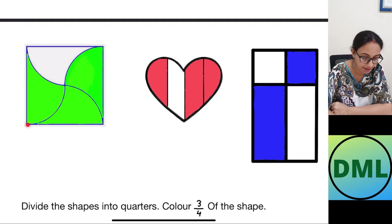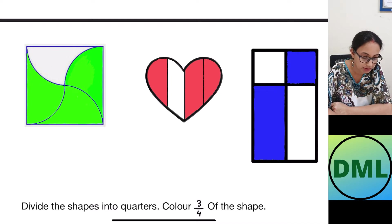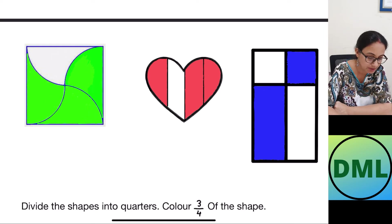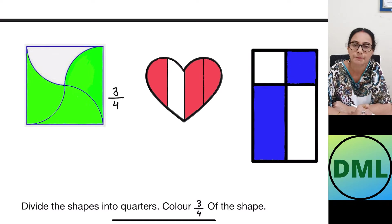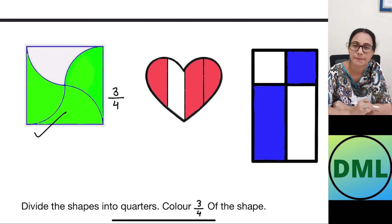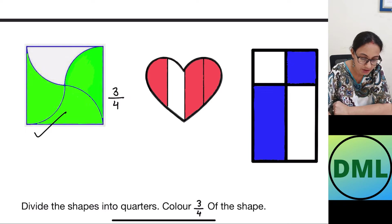Let's look at the next figure — this is the square, and I made cuts like this. How many parts? One, two, three, and four parts. Are the parts equal? Yes, all parts are equal. How many parts are shaded? One, two, and three. This figure has four equal parts in the denominator and three shaded — this figure is three by four. This is my answer.